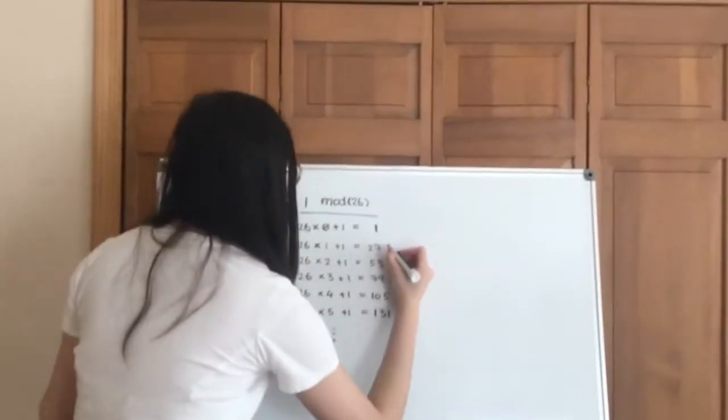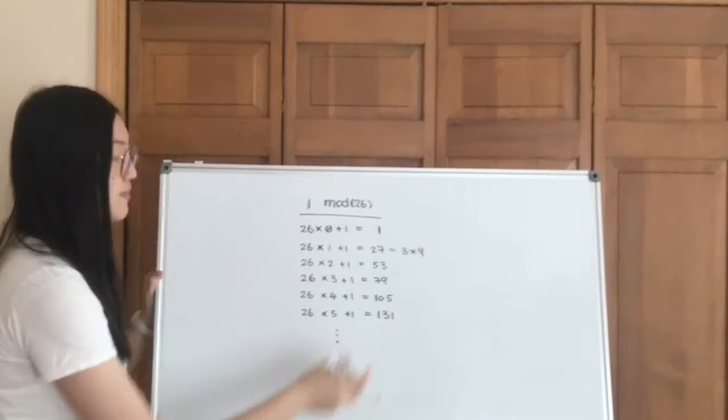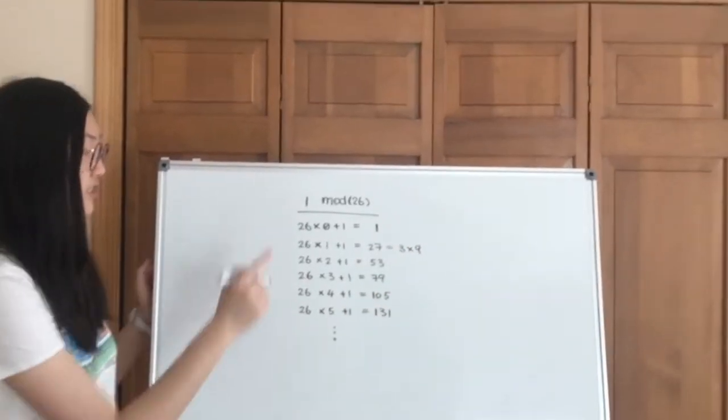Take a look at 27. I can split it into 3 times 9, which means that 3 and 9 are inverses in mod 26.